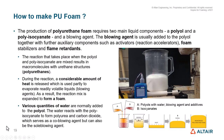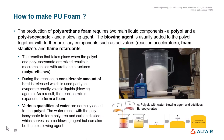The reaction that takes place when the polyol and polyisocyanate are mixed results in macromolecules with urethane structures, which are known as polyurethanes. During this reaction, a considerable amount of heat is released, which is partly used to evaporate readily volatile liquids. As a result, the liquid reaction mixture is expanded to form a foam. Various quantities of water are also added to the polyol.